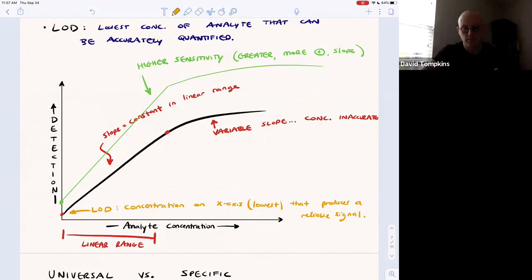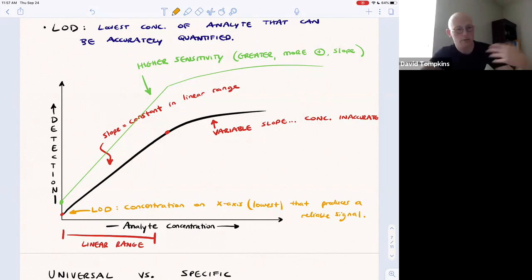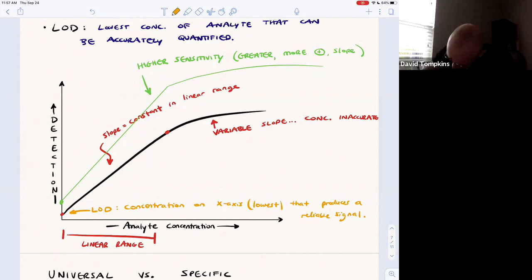Below that limit of detection, simply the detector is not smart enough or savvy enough to be able to detect the analyte of interest compared to other molecules in the background. This is the lowest concentration where we can rely on the data. That would be whatever x value is here on the x-axis.